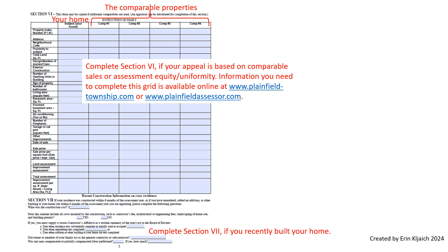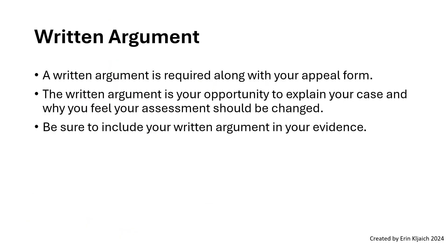Section 7 needs to be completed if you recently built your home and are appealing your value based on the construction costs. The written argument is required along with your appeal form. The written argument is your opportunity to explain your case and why you feel your assessment should be changed. Be sure to include your written argument with your evidence.